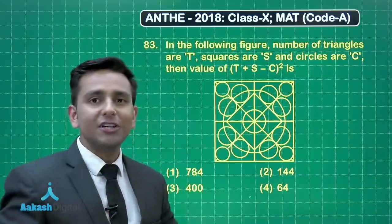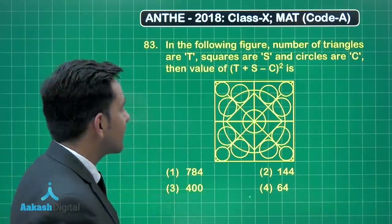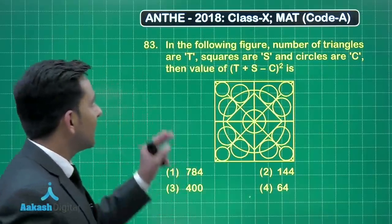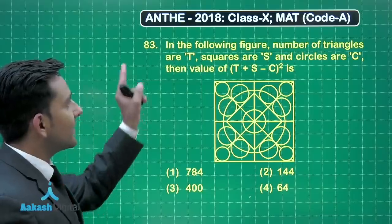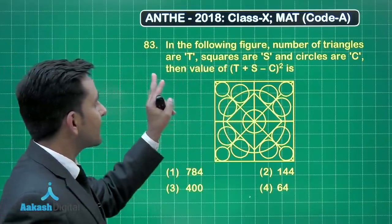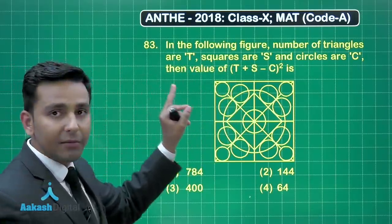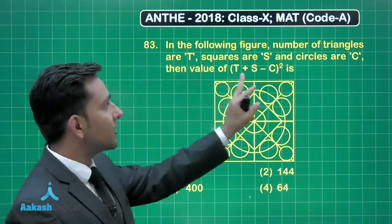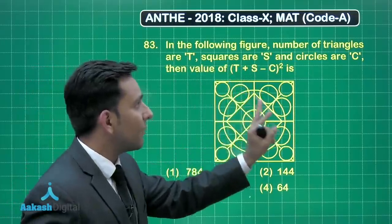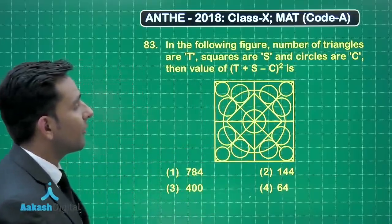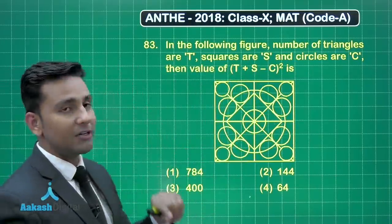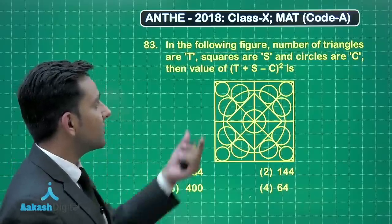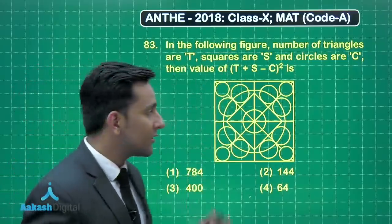Friends, let's discuss question number 83. This question is from Diagrammatic Puzzle. So this question states: in the following figure, number of triangles are represented by capital T, squares are represented by capital S, and the number of circles are represented by capital C. And what we have to find in this question is the value of the given expression.